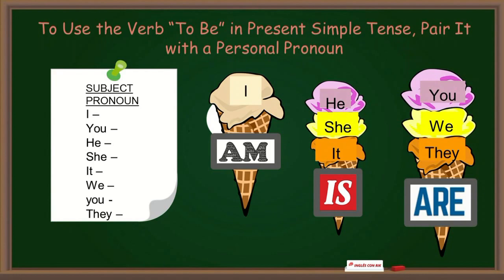El are se queda con cuatro pronombres sujetos: you singular y you plural, we, y they. You are — tú eres, tú estás. You are — ustedes son, ustedes están. We are — nosotros somos, nosotros estamos. They are — ellos son o ellos están.